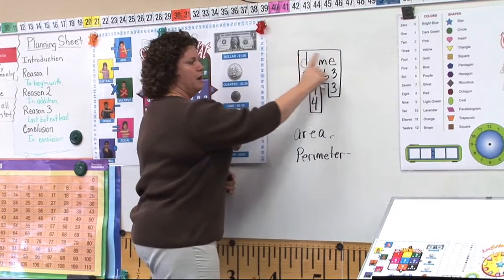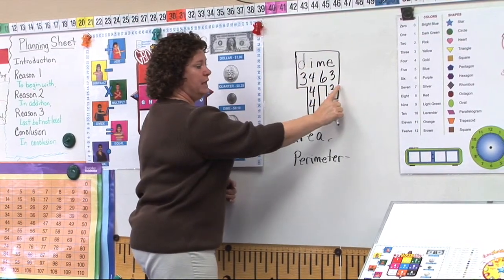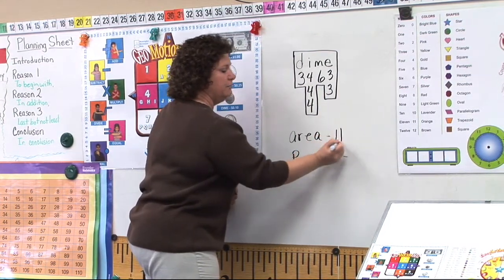And then they just box out this area here. And there's one, two, three, four, two rows of four, which is eight, nine, ten, eleven. So the area of this word is eleven.